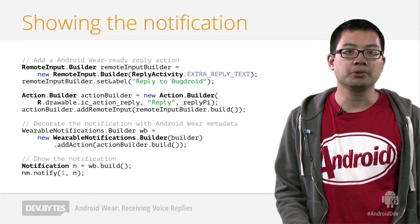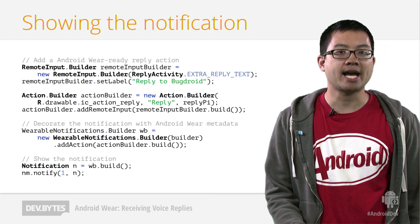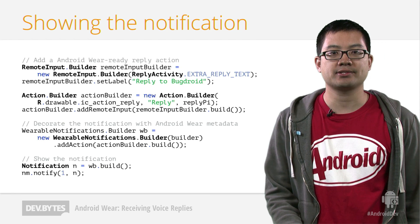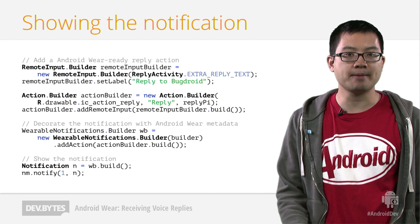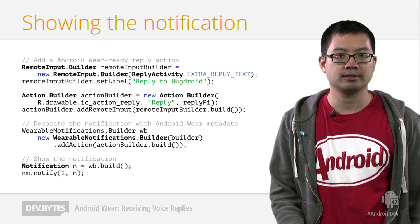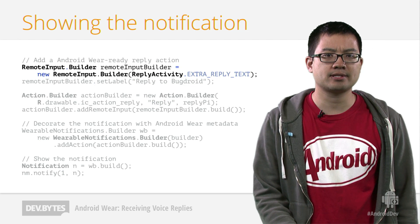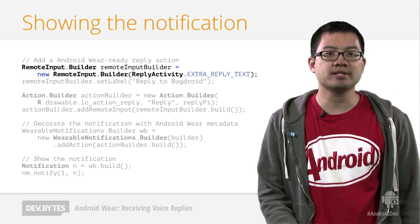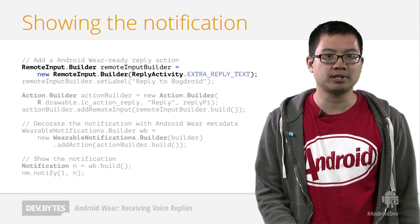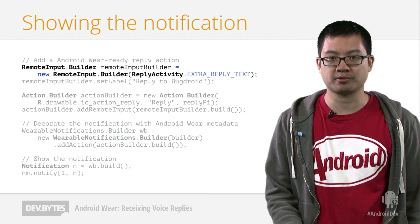Finally, we'll use the remote input builder and action builder classes to construct an action that'll be capable of receiving voice input. The extra reply text tells Android Wear the name of an intent extra to add to the reply intent when a voice response was provided.